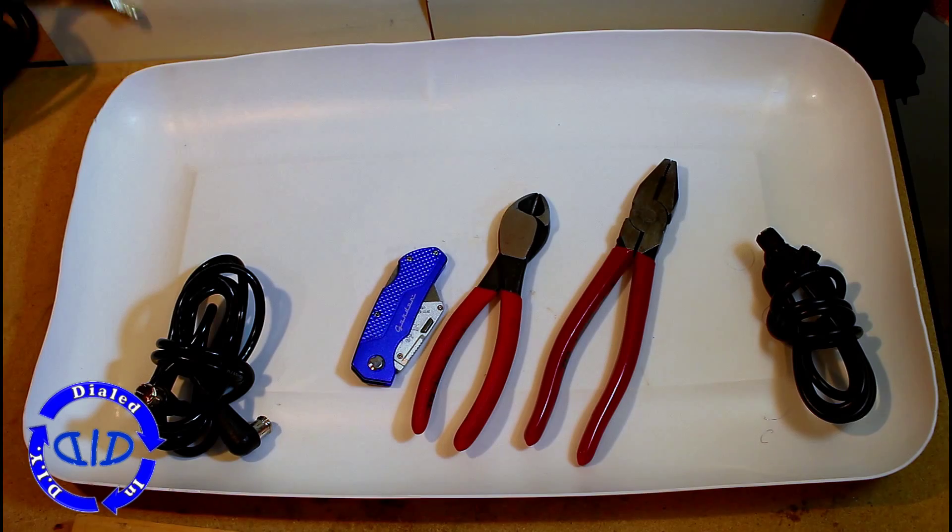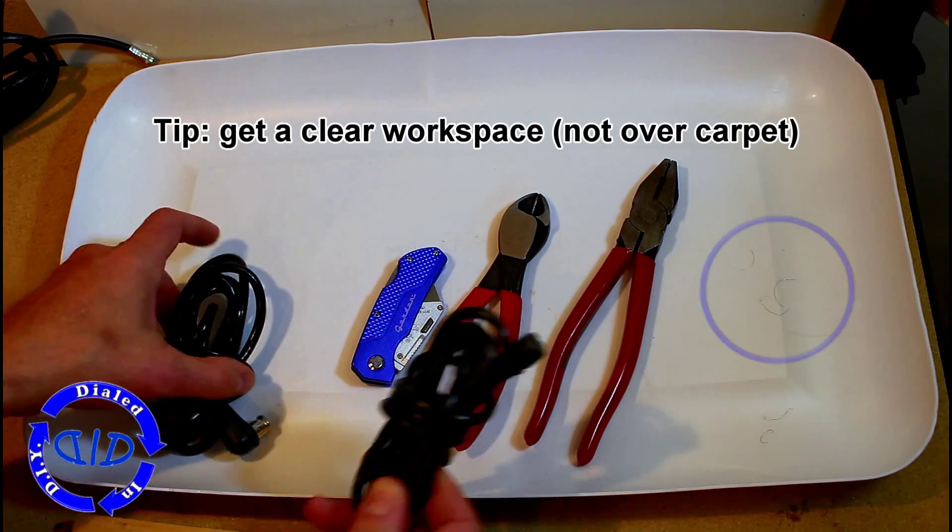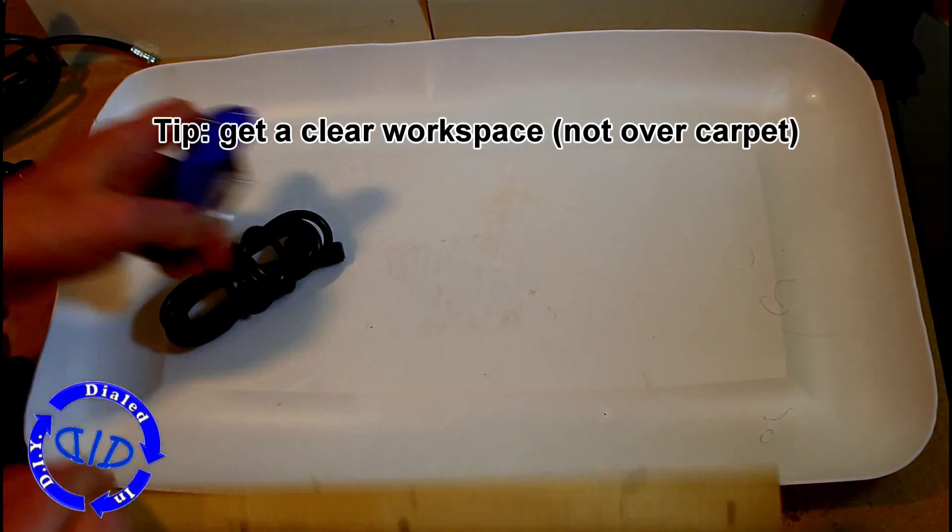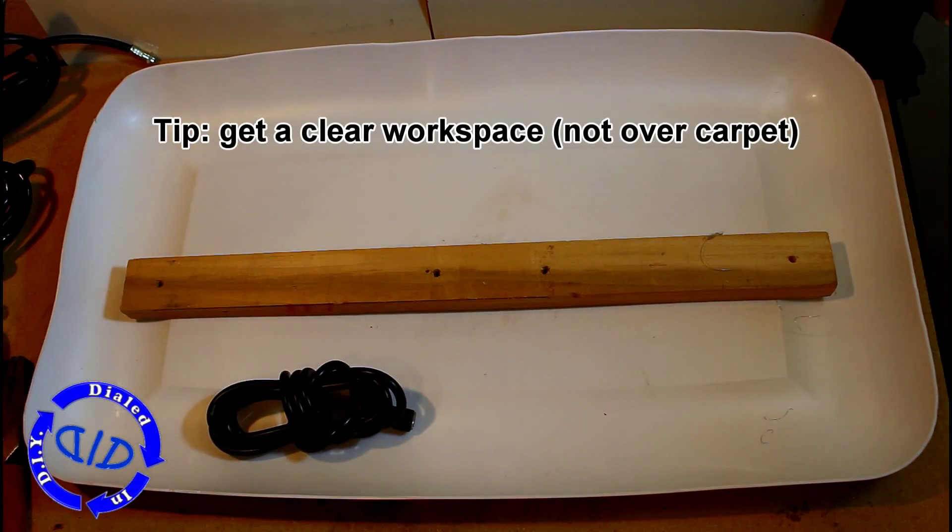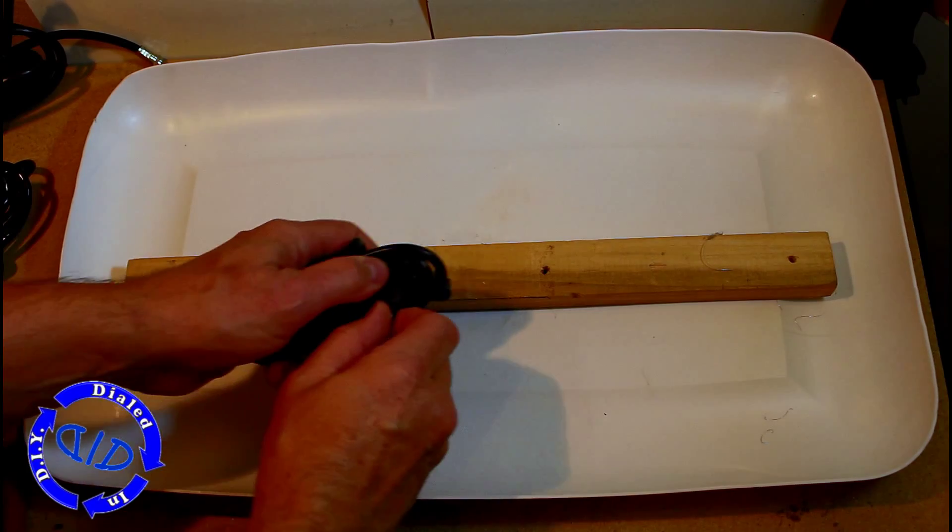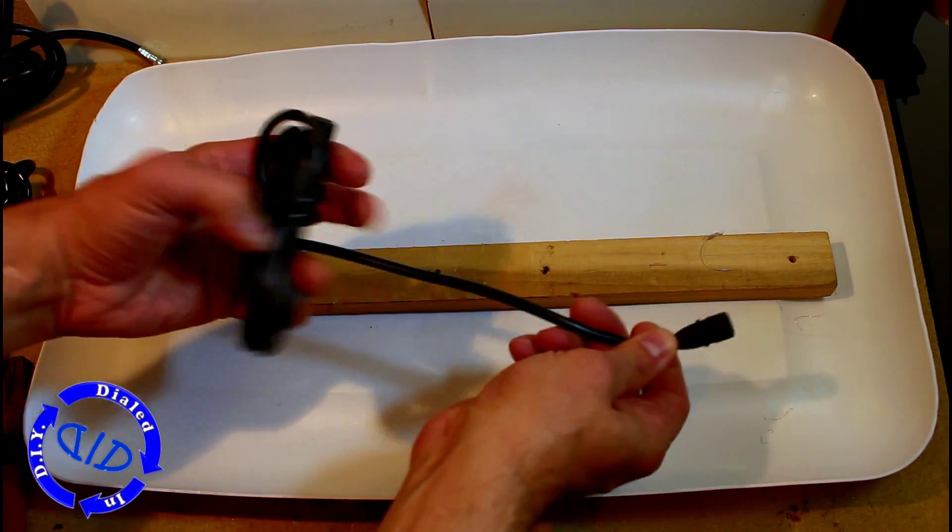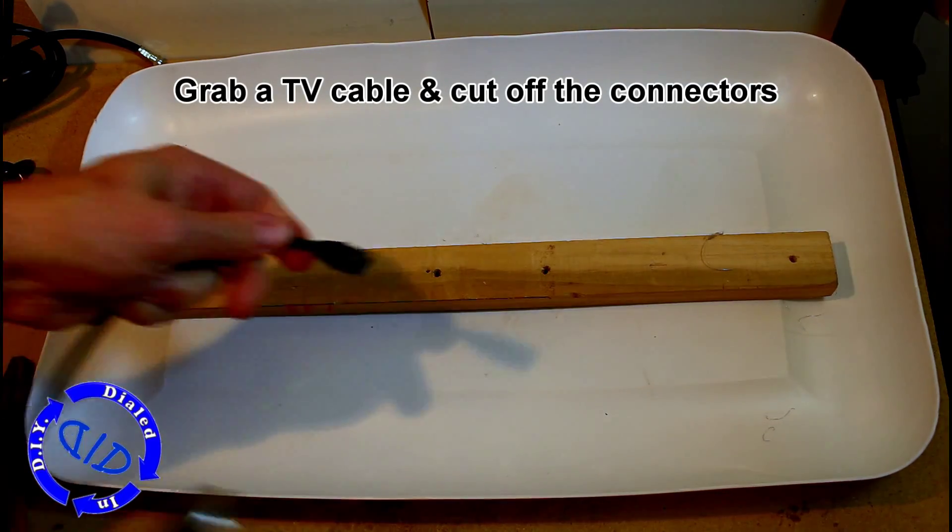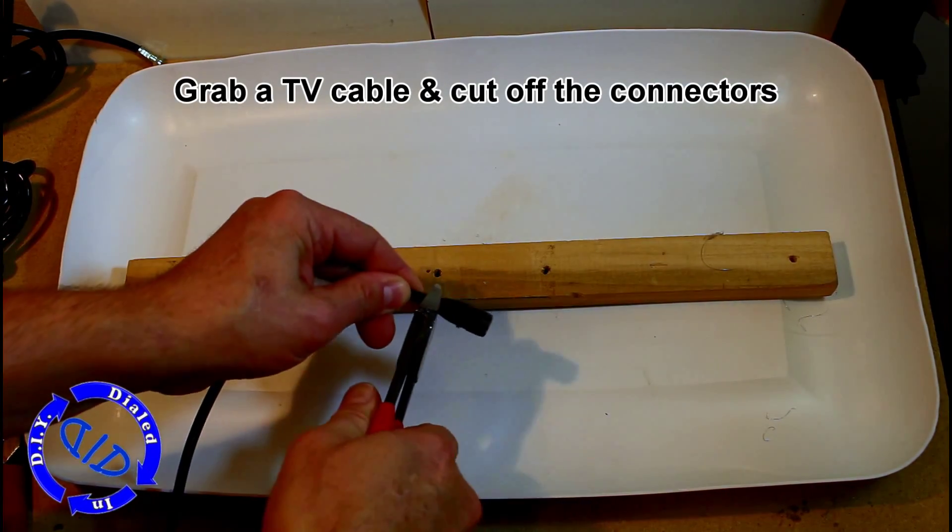I'm going to do this on a tray that I actually made salvaging a laundry basket in a previous video. As you can see, there are some tiny pieces that are going to come out everywhere, and you want to keep this mess contained. If you don't have a tray like this, I recommend doing it over your garbage can before you put it out to the curb. That way all the leftover pieces go straight into the trash.